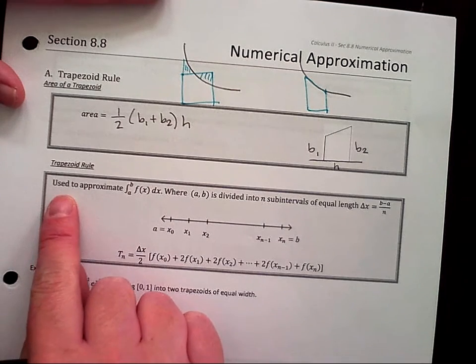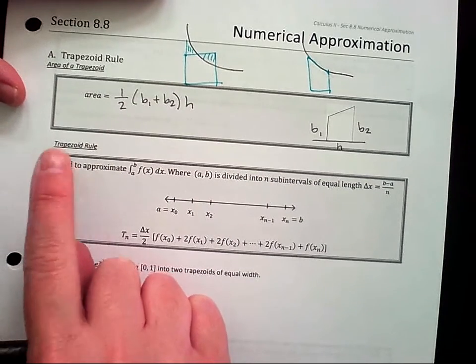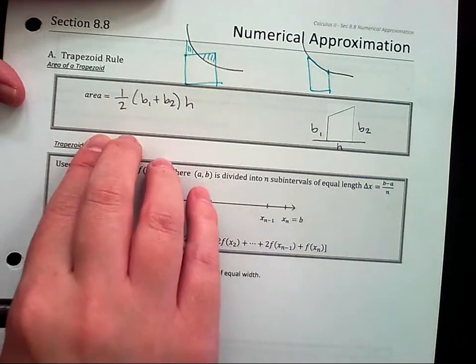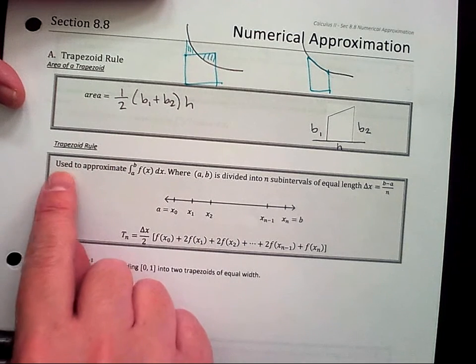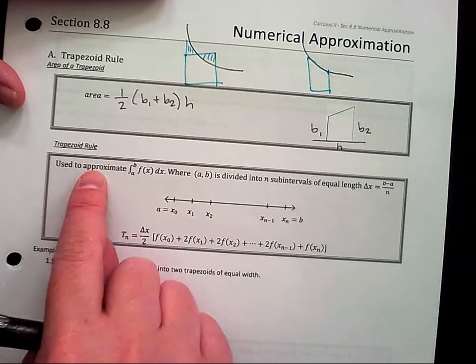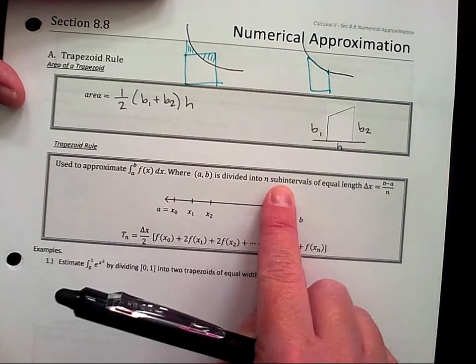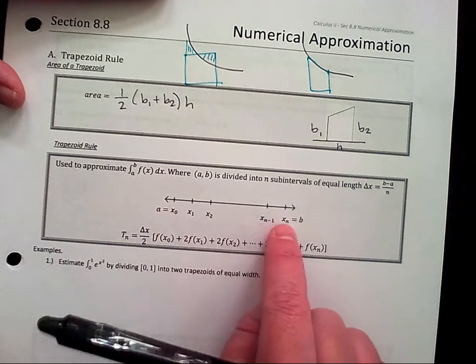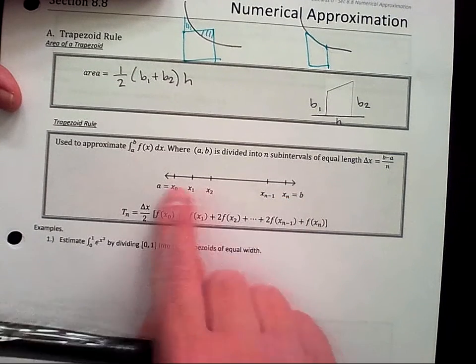So if we draw repeated trapezoids, here's the formula for the trapezoid rule. So that's just to remember where the trapezoid comes from, or that's to remember the area of the trapezoid formula. So here we're going to use the trapezoid rule to approximate the integral from a to b of f(x) dx, where (a,b) is divided into n subintervals of equal length. So here's our subinterval, right? Here's our left endpoint, here's our right endpoint. And that's our interval. And we're going to draw trapezoids here.